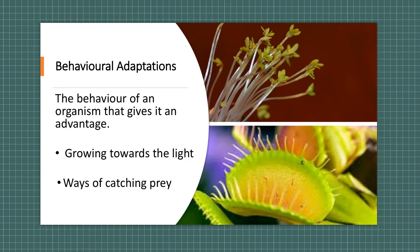Plants also have behavioural adaptations, which is the behaviour of an organism that gives it an advantage. The most common one for all plants that grow via photosynthesis through chlorophyll and chloroplasts is they grow towards the light. They have hormones called auxins that allow the plants to move towards light, and that's an advantage because it increases their growth rates due to increased photosynthesis.